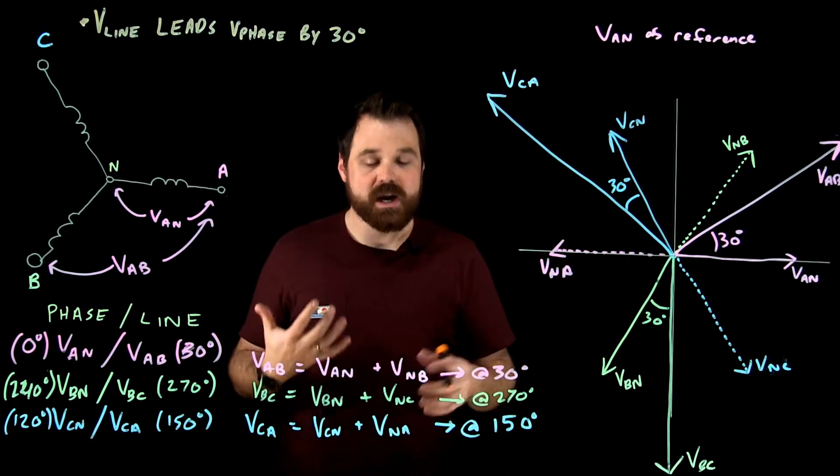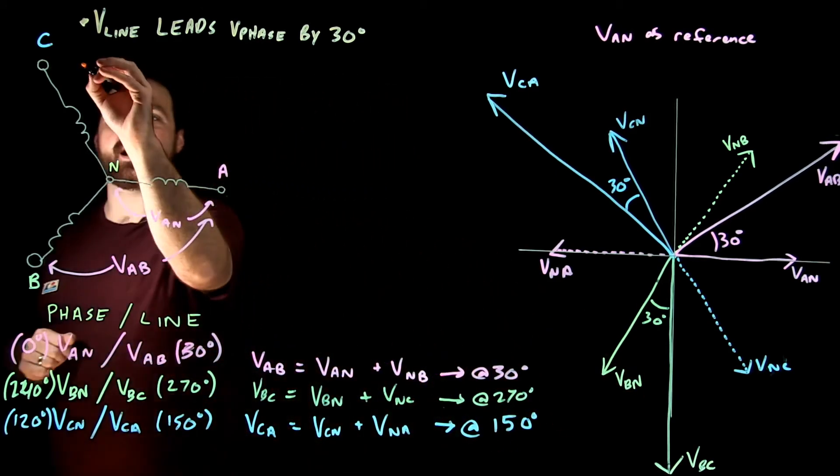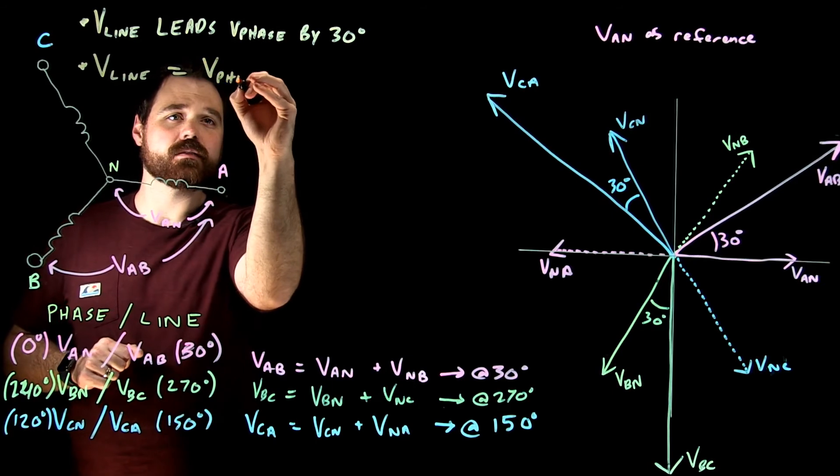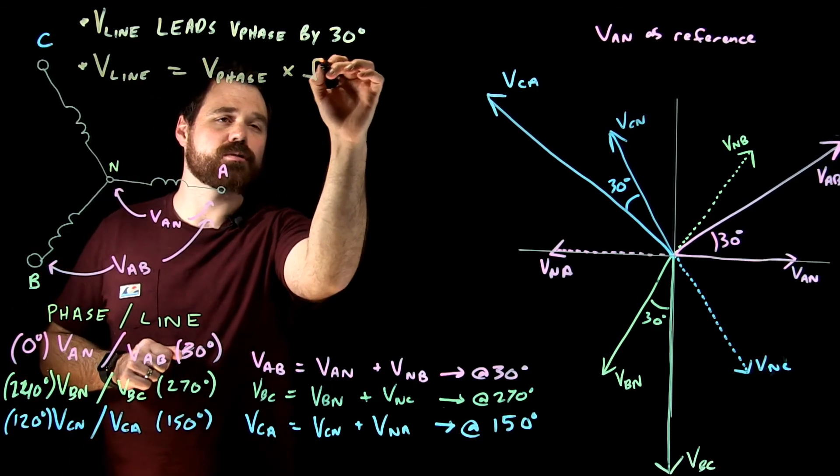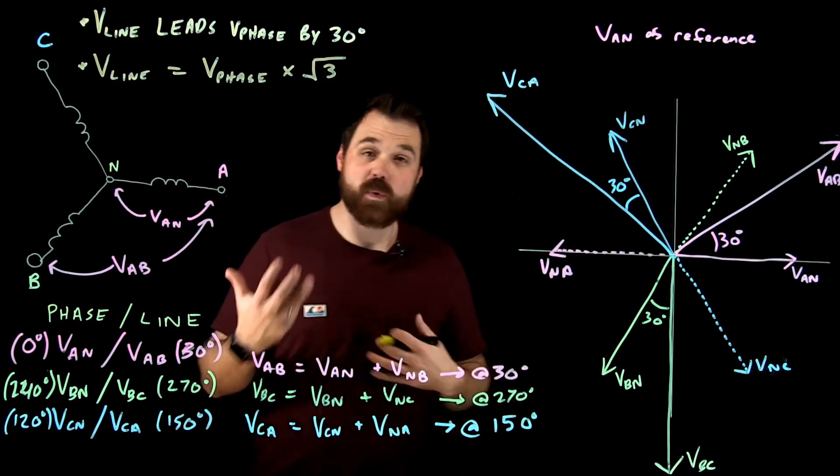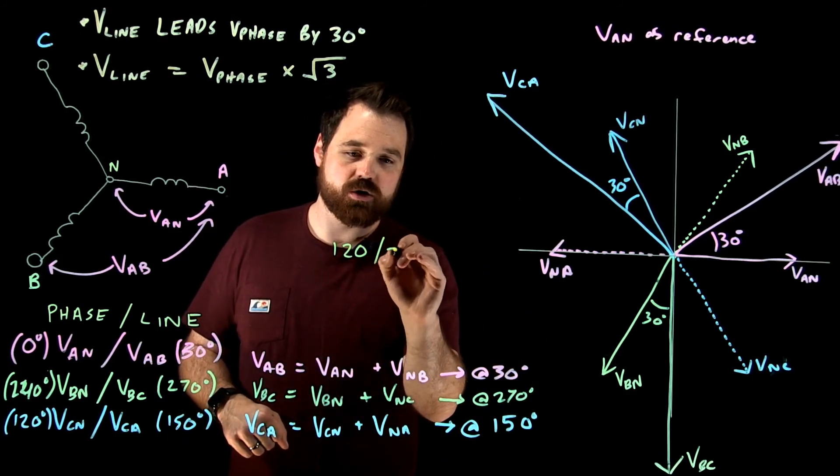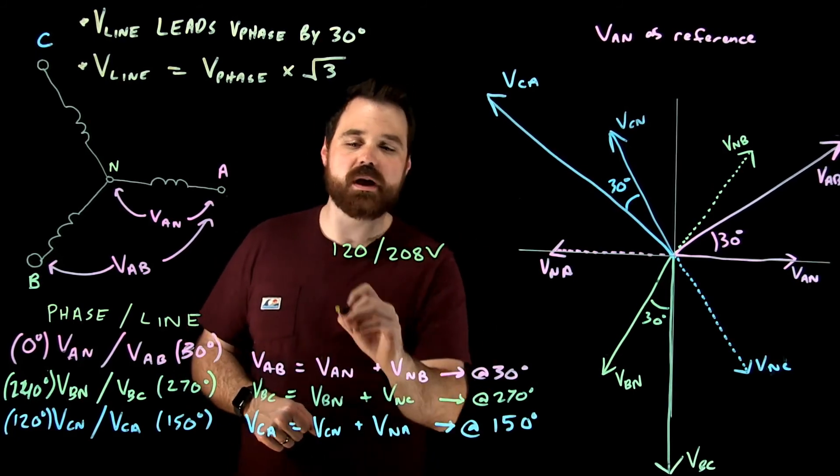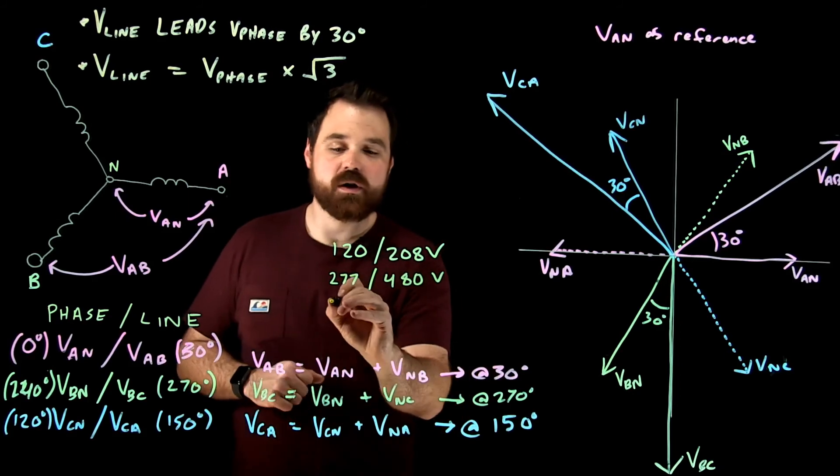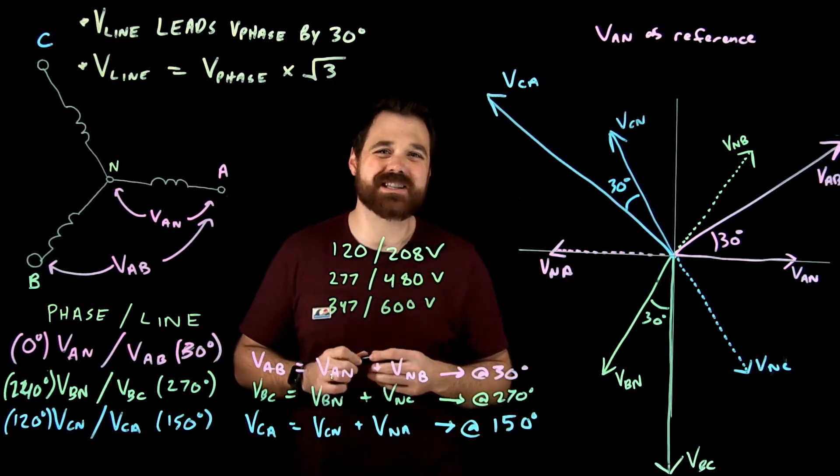The other relationship that we would see with the numbers, and we don't necessarily see it here because we don't have the numbers, but if we were to actually add these phasors up, what we would see is that V_line always equals V_phase times the square root of three. And what we can do is you can see this in some really common voltages. When we talk about our common voltages of a Y system, kind of our big three most common that we'll see are 120, 208, which is 120 times root three equals 208, 277, 480 volts, 277 times root three equals 480, or 347, 600 volts. 347 times root three equals 600 volts. We can see that relationship there.